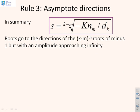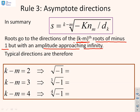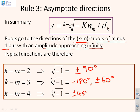So the summary of the result: S equals the (k-m)th roots of minus K·Nm over dk. The roots go to the direction of the (k-m)th roots of minus 1, but with an amplitude approaching infinity. The square roots of minus 1 give directions plus or minus 90 degrees. The cube roots of minus 1 have directions minus 180 degrees or plus or minus 60 degrees. The fourth roots of minus 1 have directions plus or minus 45 degrees or plus or minus 135 degrees. Those are the asymptotic directions.